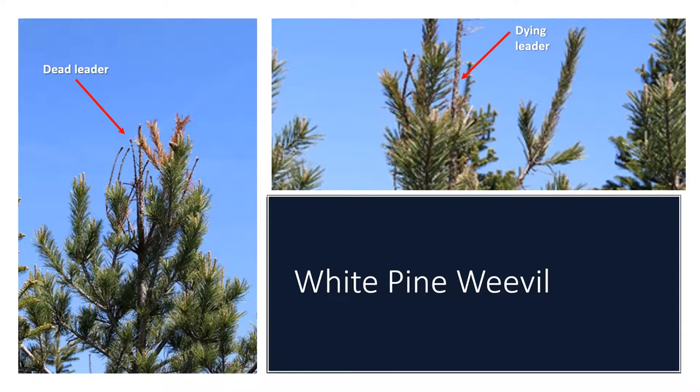You notice your white pine doesn't look too good. The main leader is dead or showing signs of dying. It's curling into the shape of a shepherd's crook and the upper lateral branches are also dying. This is a classic example of the damage caused by the white pine weevil. White pine weevils damage all species of pine, especially white pine, but other varieties of Christmas trees are also susceptible — for example, the Norway spruce and other spruces.